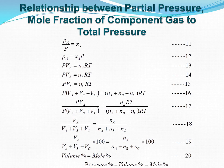From this, P_A / P = y_A, where y_A is the mole fraction, so P_A = y_A · P. When the ideal gas law is applied to each component at total pressure P, we can write P·V_A = N_A·RT, P·V_B = N_B·RT, and P·V_C = N_C·RT. Adding these three equations gives P·(V_A + V_B + V_C) = (N_A + N_B + N_C)·R·T.